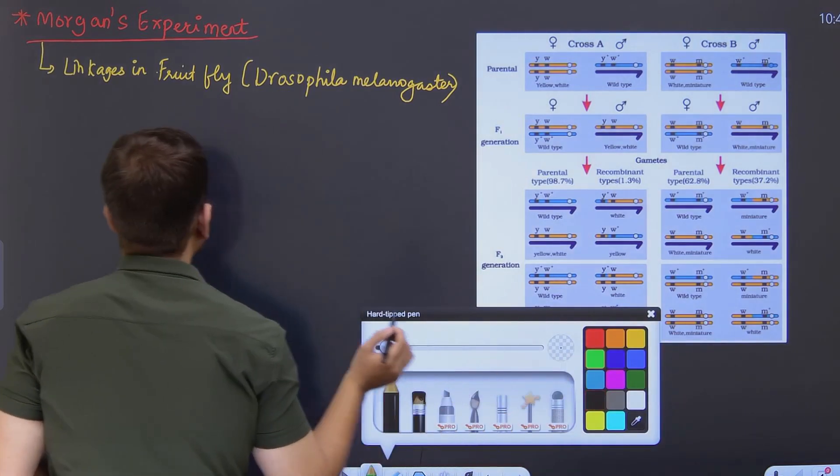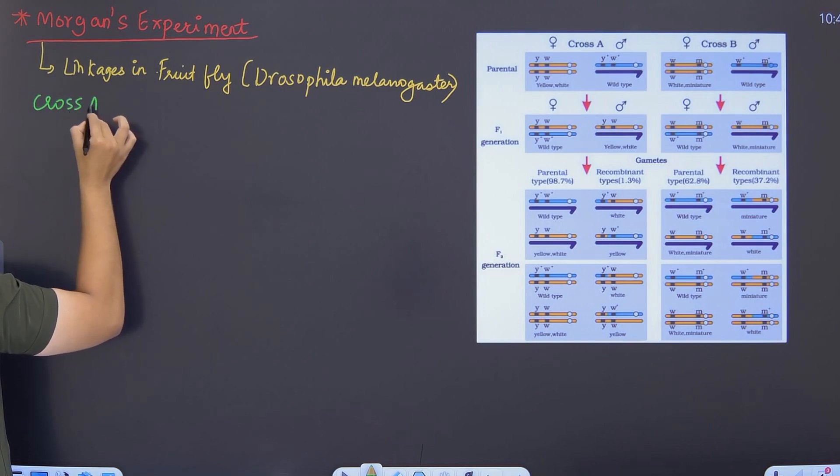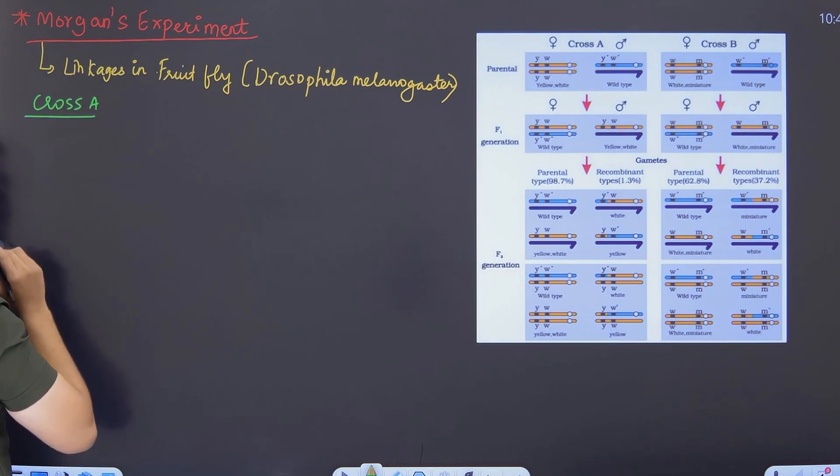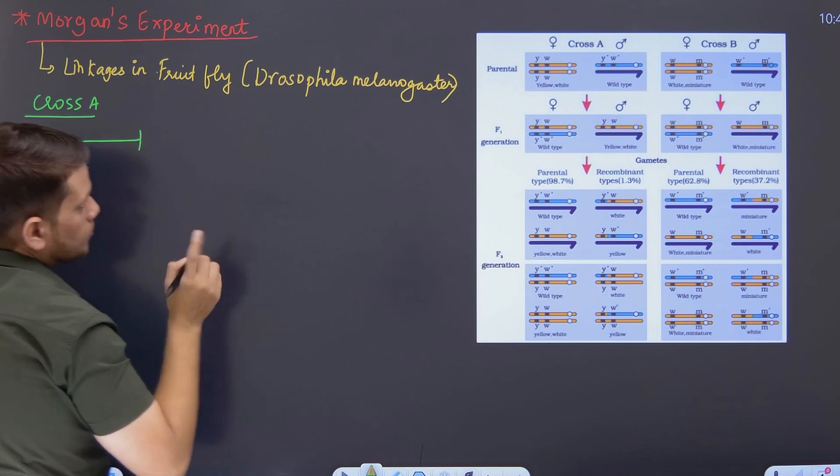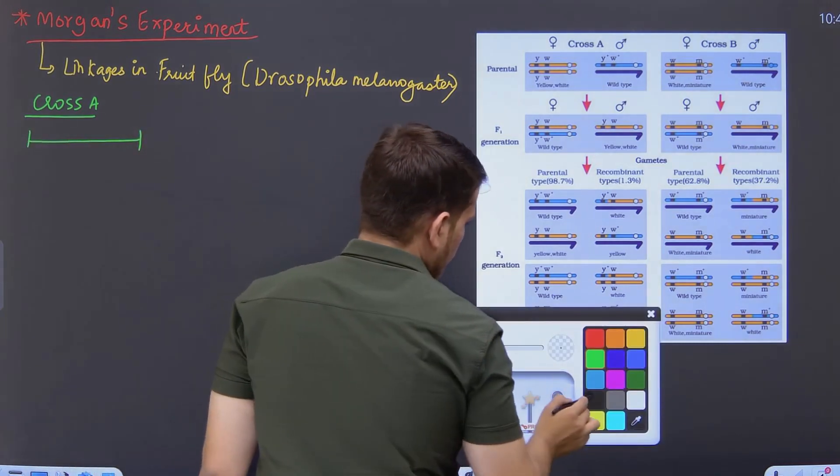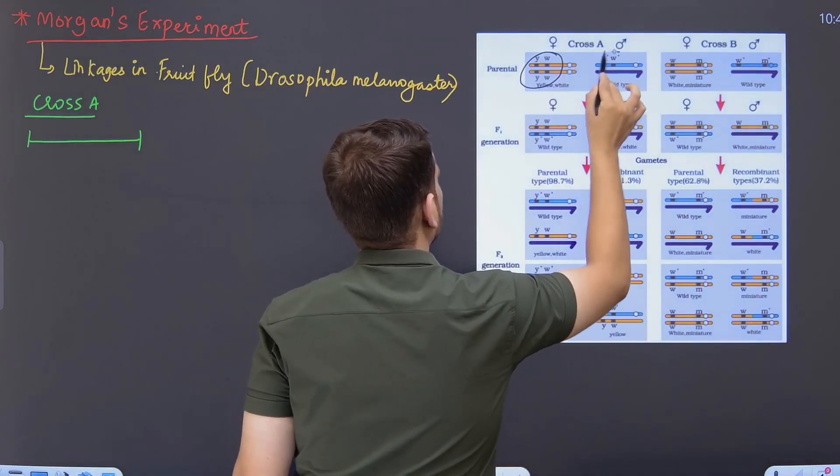Say we talk about cross A. Now, he took the genes. But if you can notice carefully, in first case, that is cross 1, the genes are very closely located. Look at it. Genes were very, very closely associated.